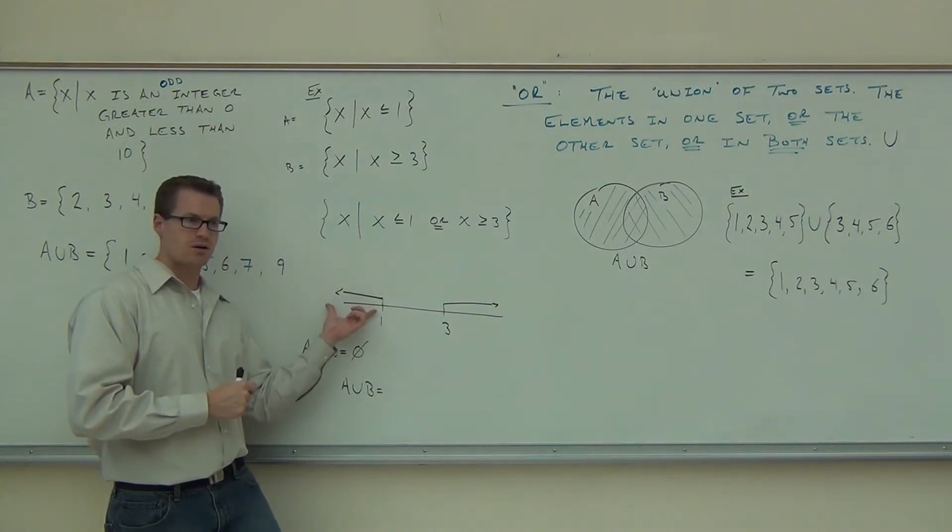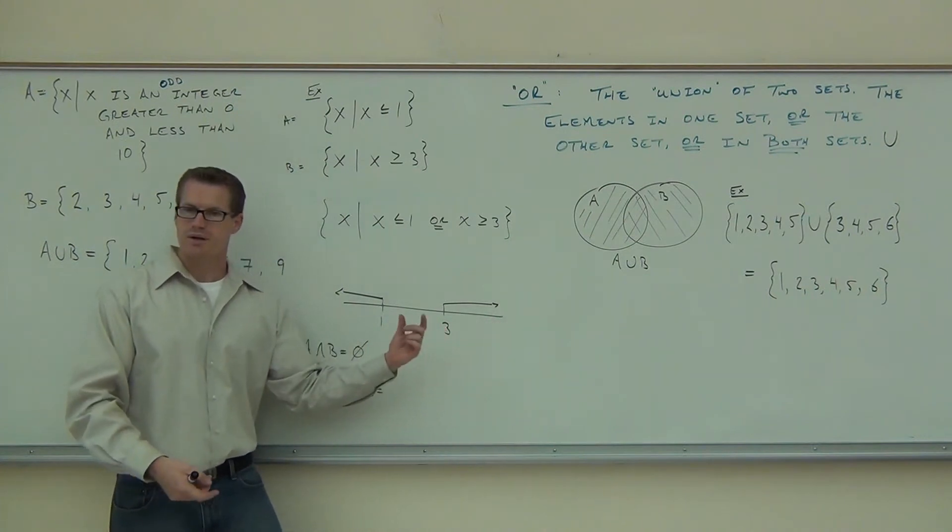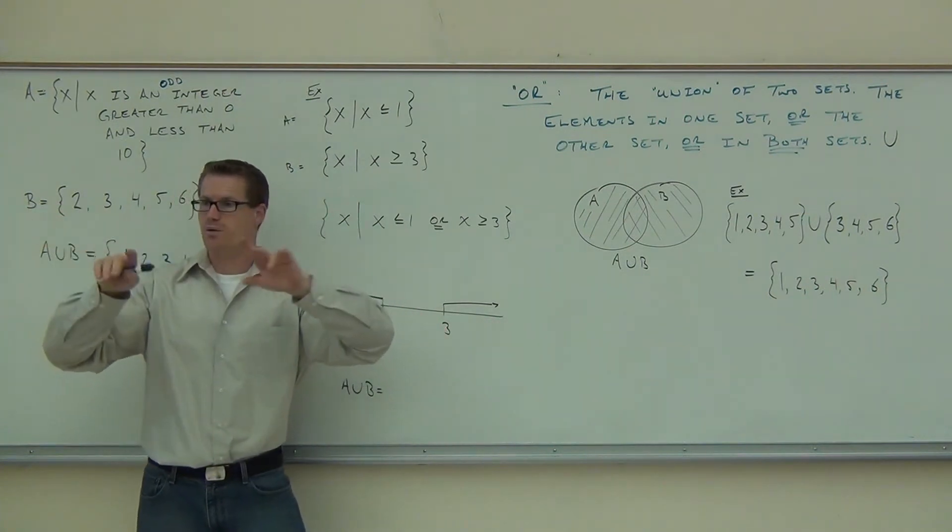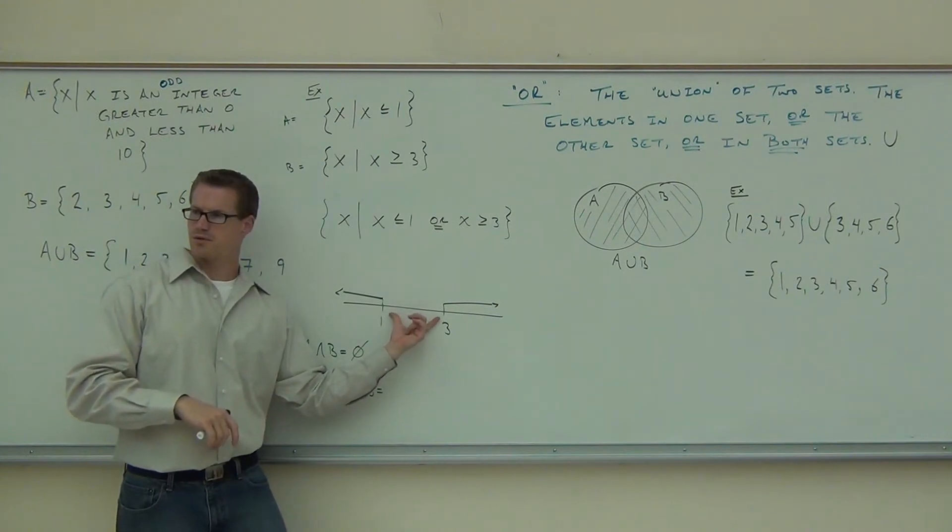That has to count in our union. This is here. We've got this one that's got to count in our union. That's there. The only place that we don't have a line or a section is between the numbers 1 and 3. Are you with me here, folks?